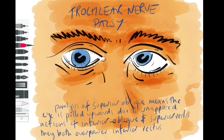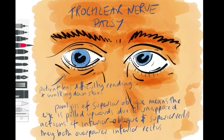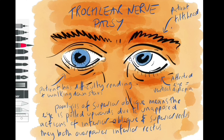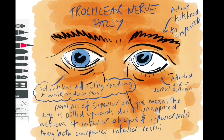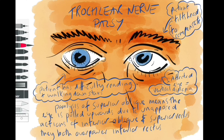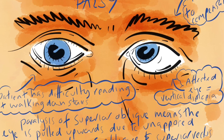So what type of symptoms would we expect with somebody with trochlear nerve palsy? Patients generally complain of issues which involve looking down — predominantly things such as reading or walking down stairs. The affected eye is suffering from vertical diplopia, which tends to be more prominent when looking downwards. The patient tends to present with a head tilt to one side to compensate for the double vision, which is a telltale sign of trochlear nerve palsy.